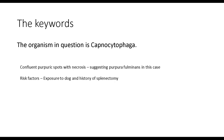The organism in question is Capnocytophaga. The key words that might suggest this bacteria are: 1. Confluent papuric spots with skin necrosis, suggesting purpura fulminans in this setting. 2. Risk factors: exposure to a dog and history of splenectomy.